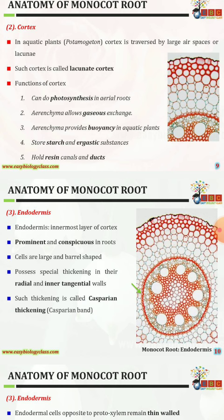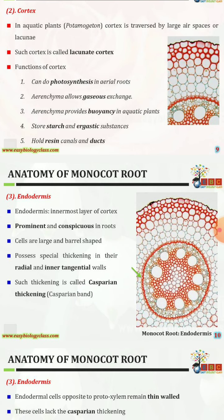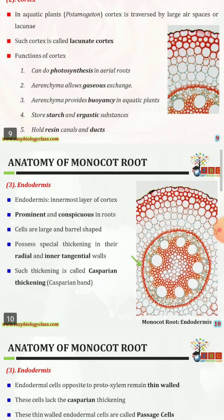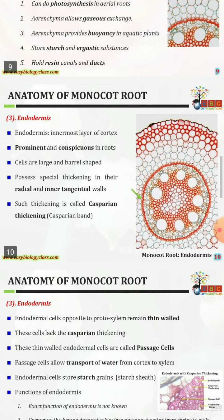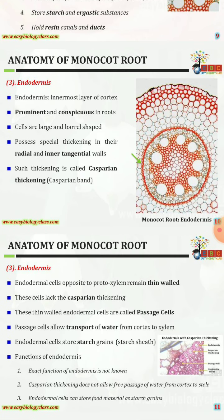Such cortex possessing lacunae is called lacunate cortex. Functions of the cortex include: photosynthesis in aerial roots, aerenchyma allows gaseous exchange, aerenchyma provides buoyancy in aquatic plants, and the cortex stores starch and organic substances, and holds resin canals and ducts.